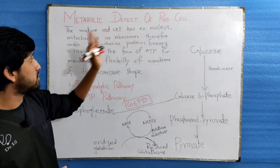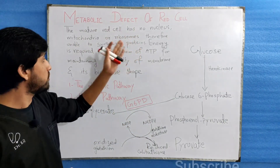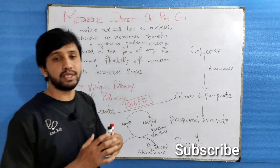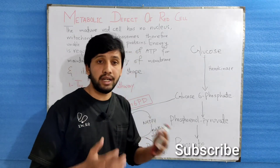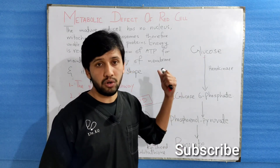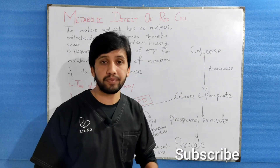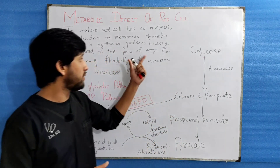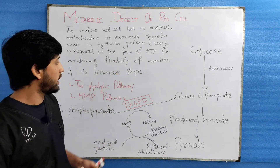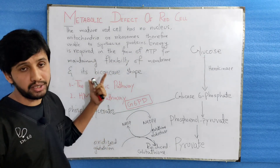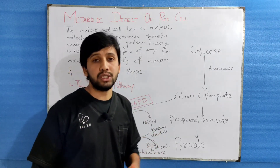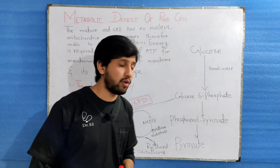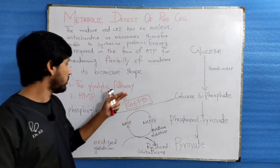The mature red cell has no nucleus, mitochondria, or ribosomes. Therefore, they are unable to synthesize energy or proteins through these organelles. The red cell needs energy in the form of ATP for its flexibility and also for its biconcave shape. This energy comes from two pathways: number one, the glycolytic pathway, and number two, the HMP pathway.